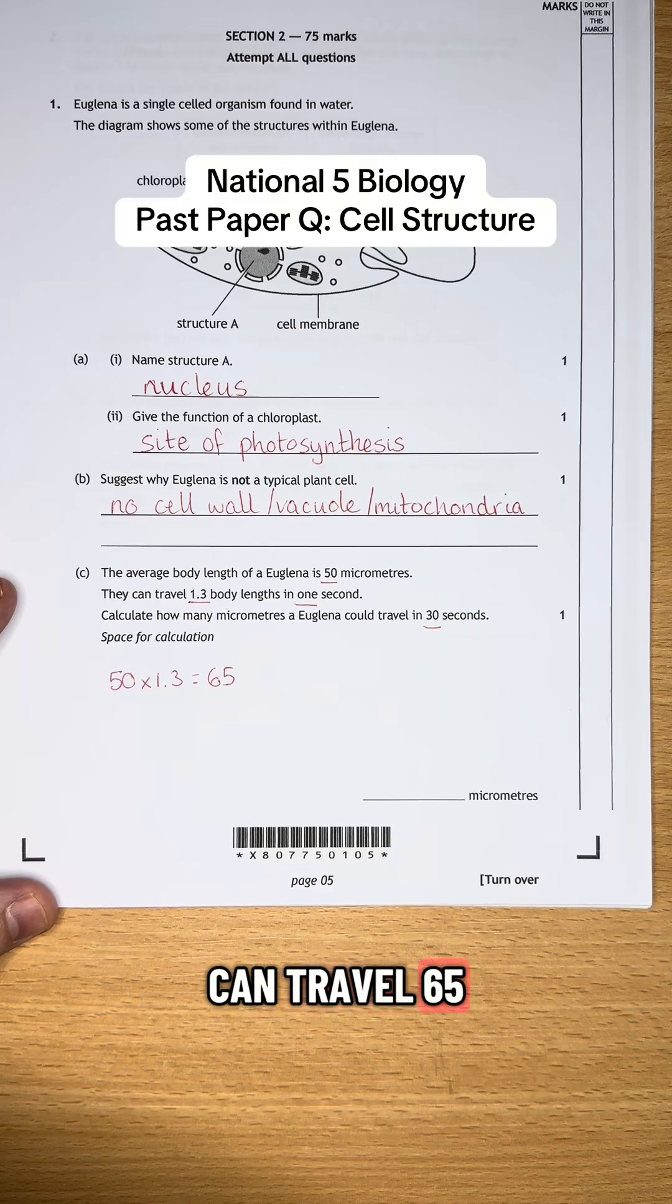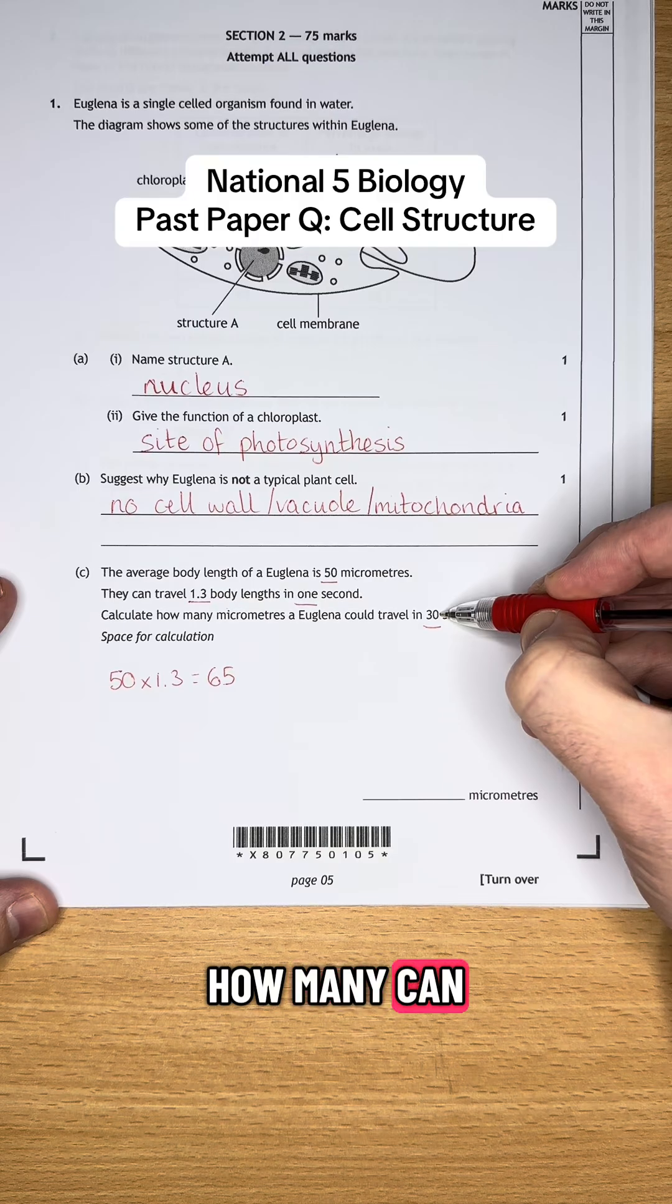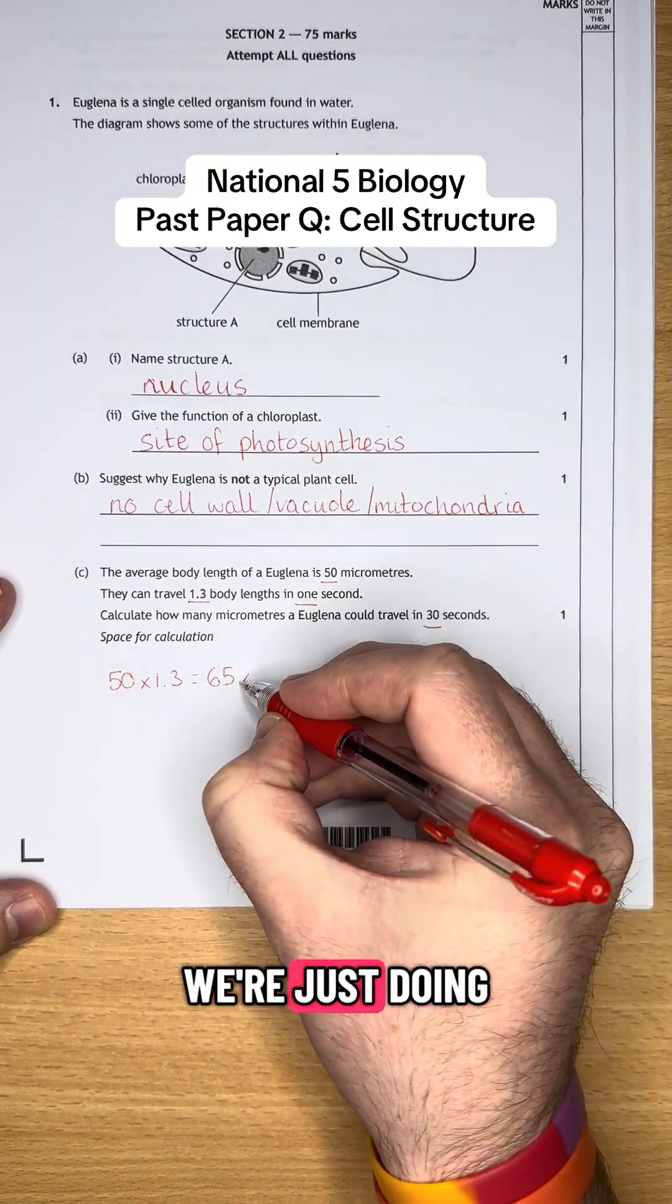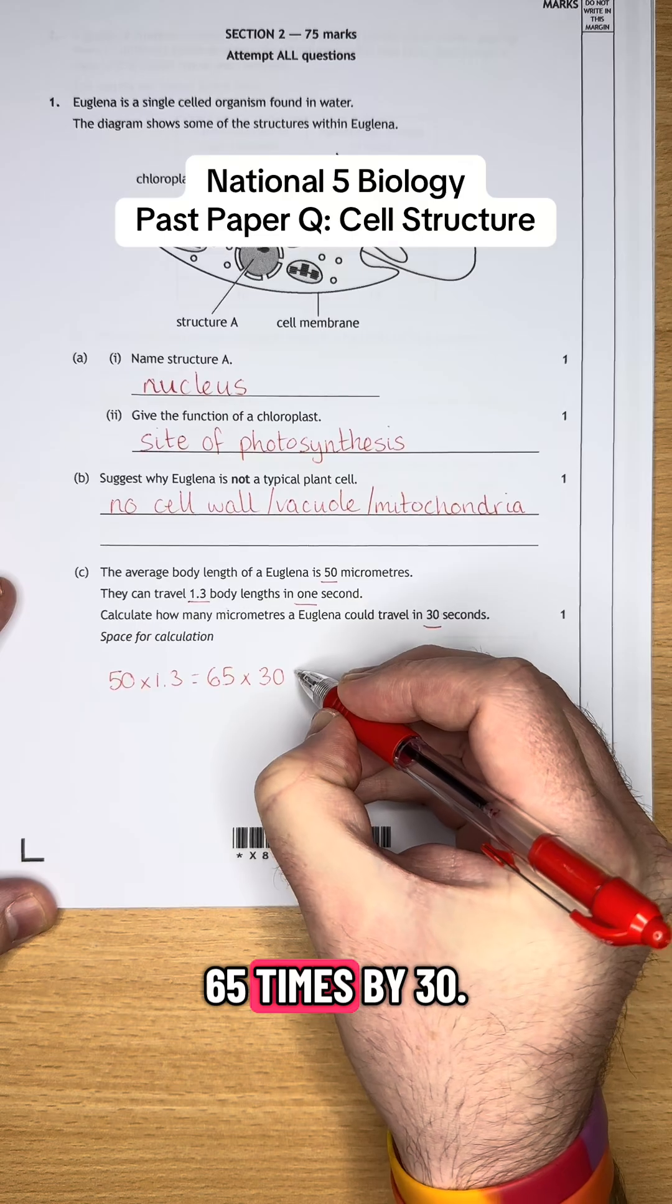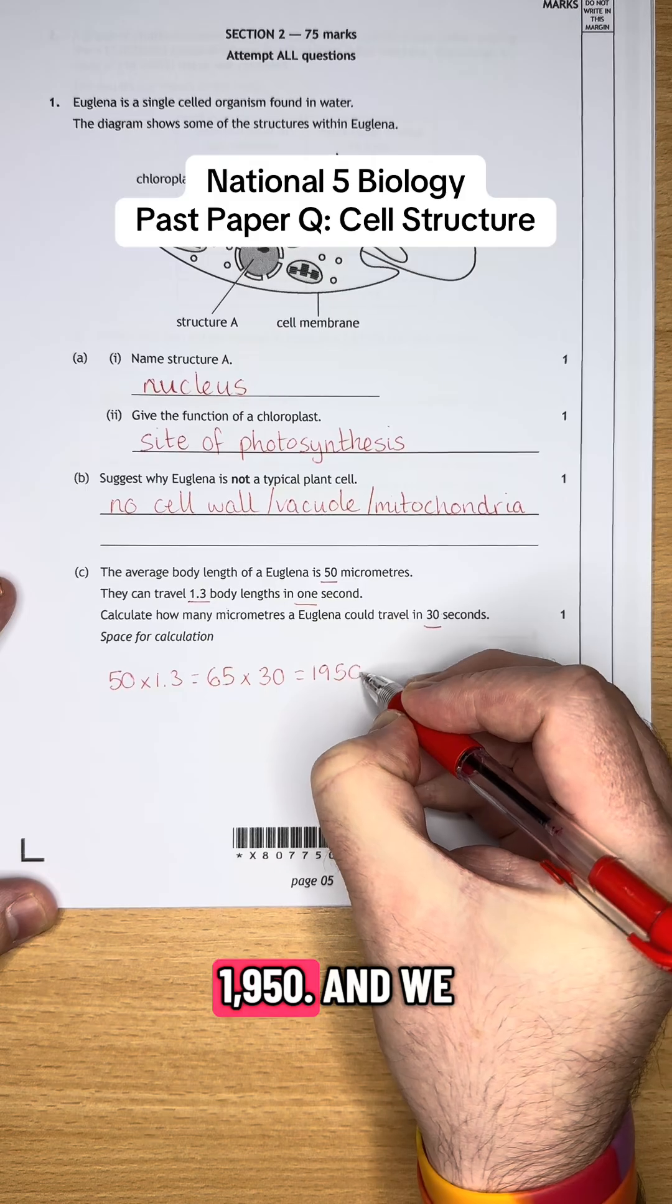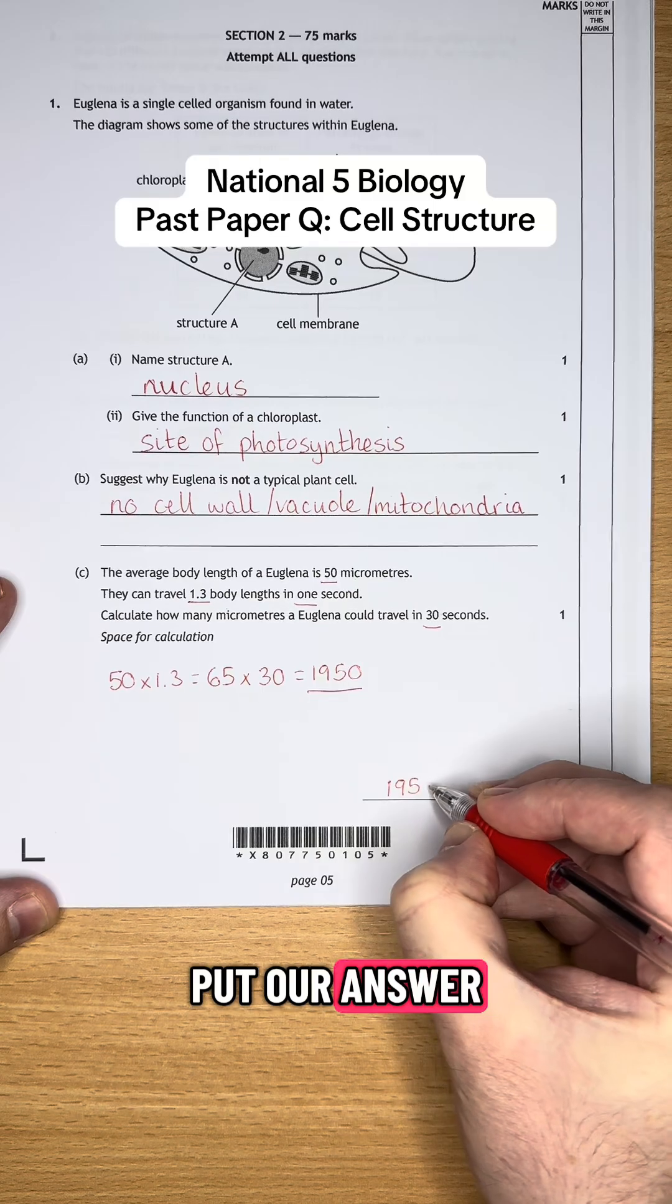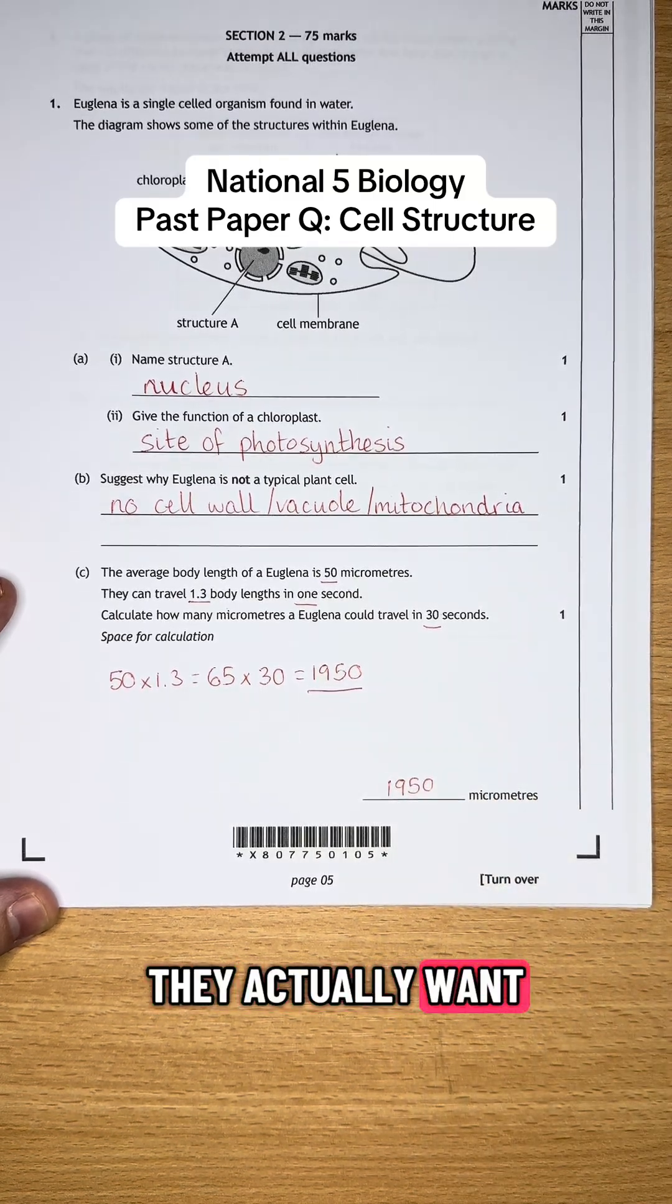Now if we can travel 65 micrometers in one second, how many can it travel in 30 seconds? Well, we're just doing 65 times by 30. And when we pop that into our calculator, that gives us 1950. And we just remember to put our answer where they actually want us to put it in the question.